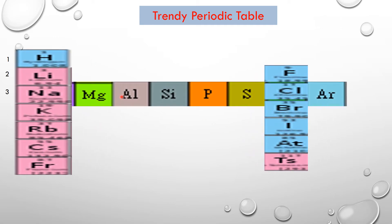The first group contains: hydrogen, lithium, sodium, potassium, rubidium, cesium, and francium. The seventh group, also known as the 17th group, contains: fluorine, chlorine, bromine, iodine, and astatine. This is the 7th A group or 17th group.